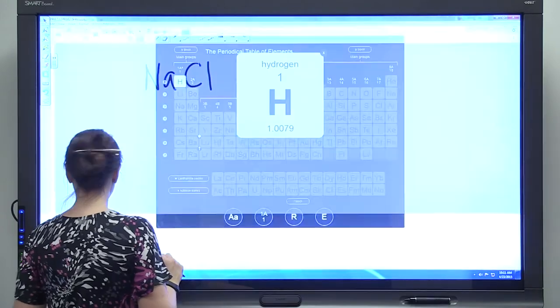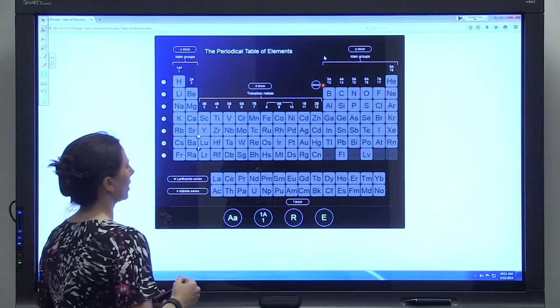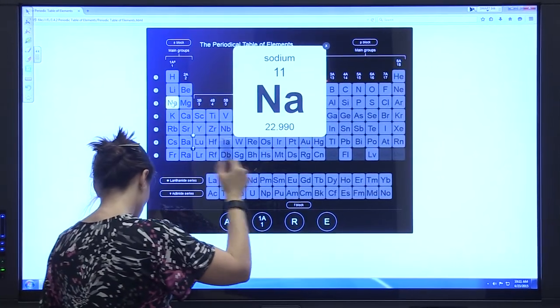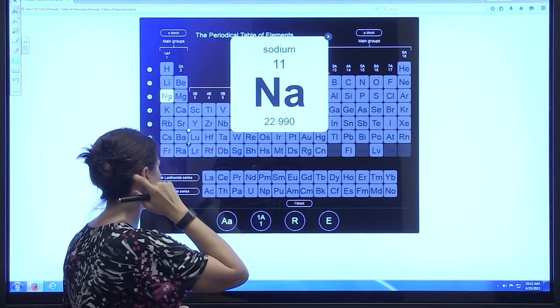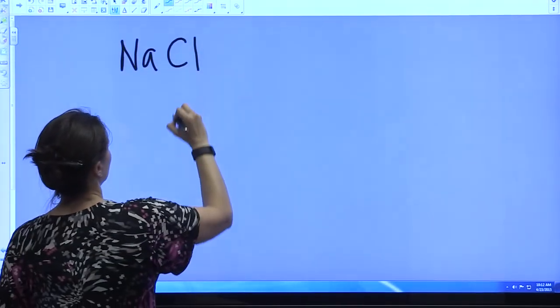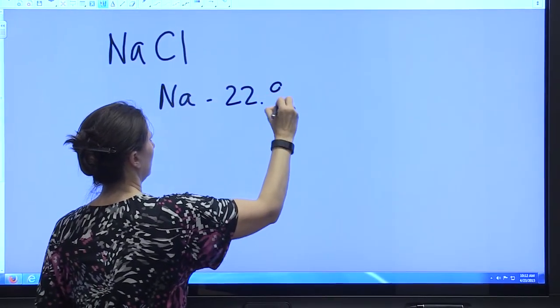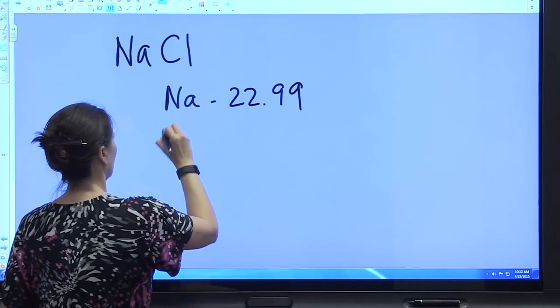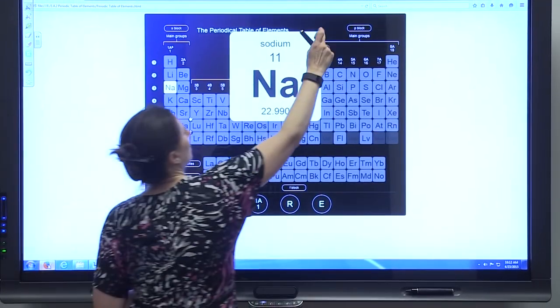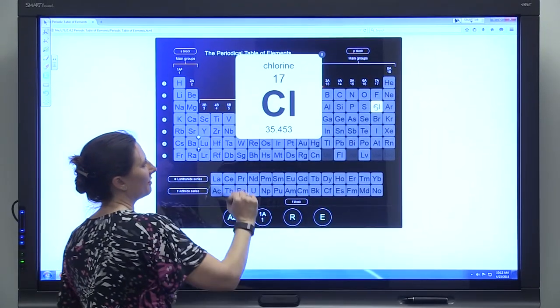So again, let's look at our periodic table. We're done with hydrogen, so we're going to need sodium, which has an atomic mass of 22.99. So let's go back and write that down. Sodium 22.99. And chlorine, back to the periodic table, 35.45.